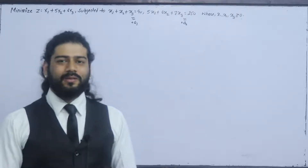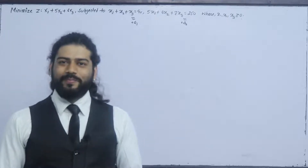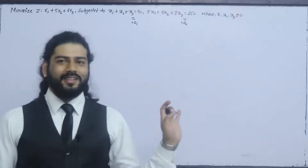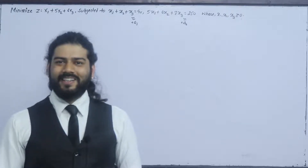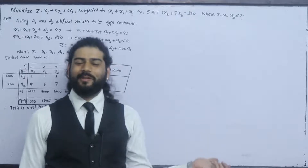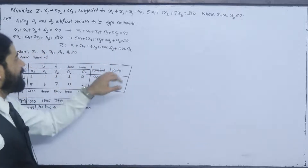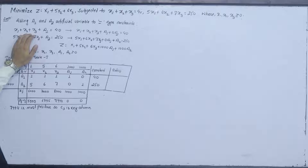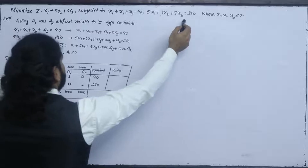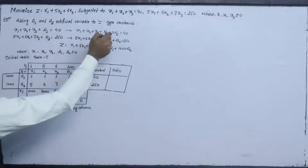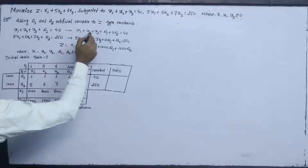We set up the Minimization Z optimization table. We write the standard form and construct the simplex table with A1 and A2 included.